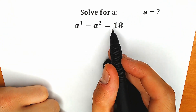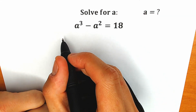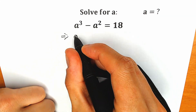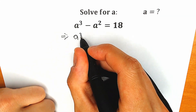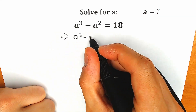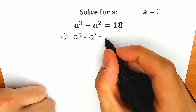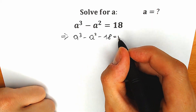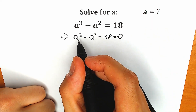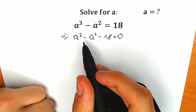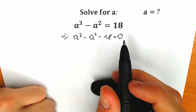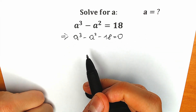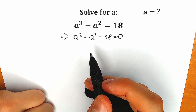First of all, let's subtract 18. As a result we have a cubic equation: a cubed minus a squared minus 18 equals zero. Basically this is a cubic equation — we have the third power and the second power, but it's the third power that defines it. So this is our cubic equation.